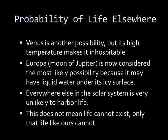Venus, of course, is another possibility, but its high temperature makes it inhospitable. Europa, the moon of Jupiter, is now considered the most likely possibility because of the liquid water under its icy surface. Everywhere else in the solar system is very unlikely to harbor life. It doesn't mean that life can't exist there — only life like ours cannot.